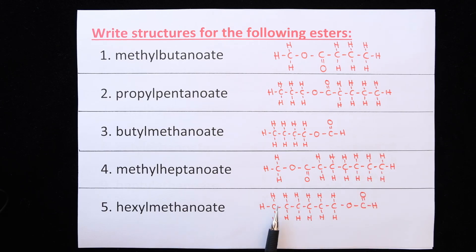Propylpentanoate would be from propanol and pentanoic acid. Methylheptanoate from methanol and heptanoic acid. Hexylmethanoate would be from hexanol. Your single bond O is from your alcohol. And methanoic acid. I think by this stage you realize how this works. So I'm going to put up the next answers for you.